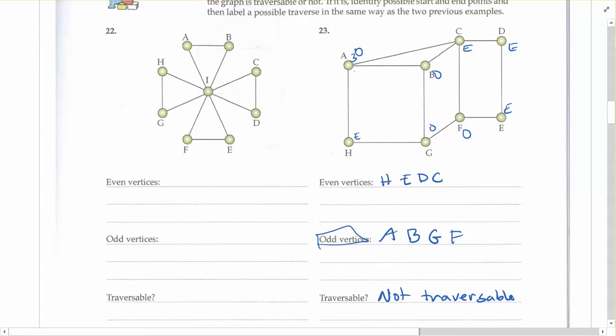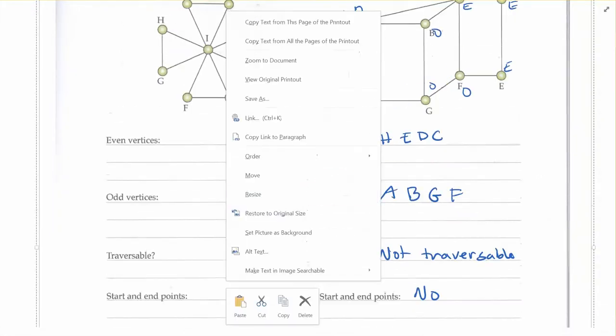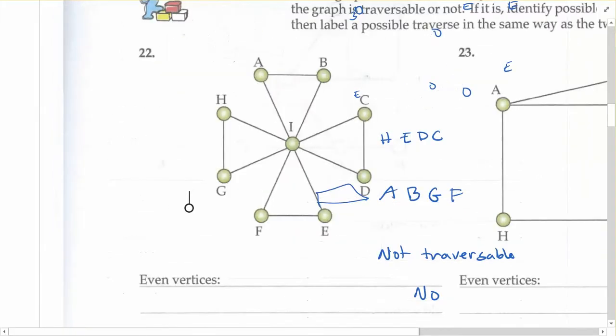So in this case, it's not even worth it to try and find your path through this network because there's no way to do it without repeating yourself. On the ones that you do find that it is traversable, I recommend trying to find that path between them.